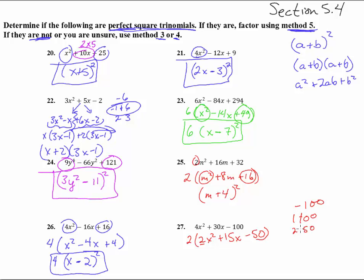Negative 1 and 100. 2 and 50. 4 and 25. 5 and 20. 10 and 10. Looks like it will be that one if we have a positive 20 and a negative 5. So 20x minus 5x minus 50. 2x squared.